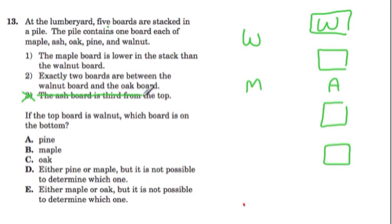The ash board is third from the top. But now this one's very helpful. Exactly two boards are between the walnut board and the oak board. Well, that means that the oak board has to be right here because if it was lower, there would be three boards between oak and walnut. So that was useful.